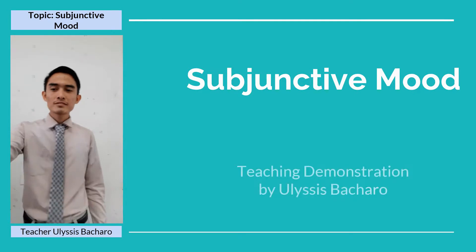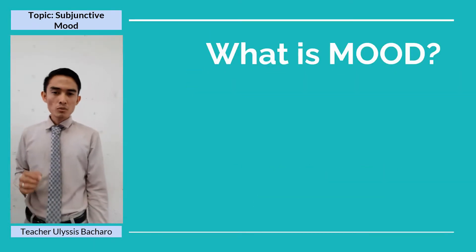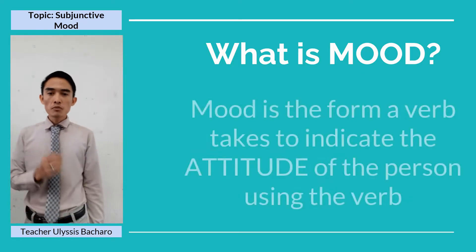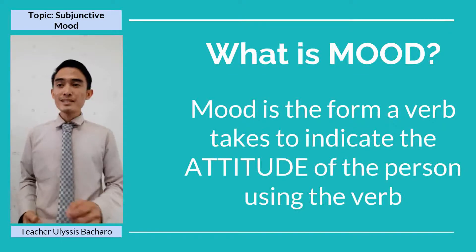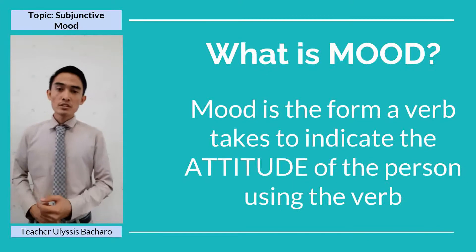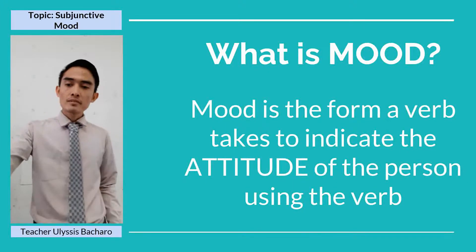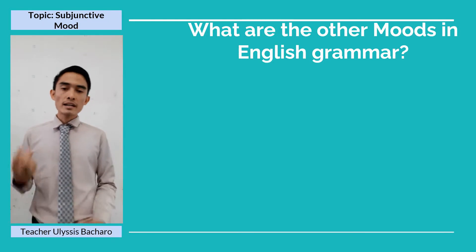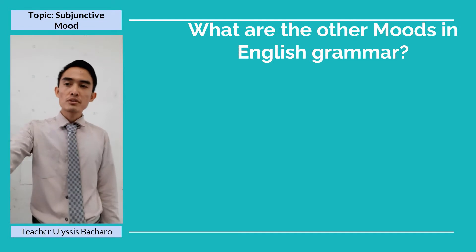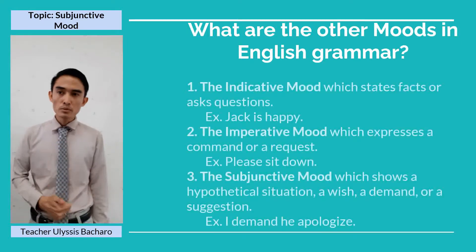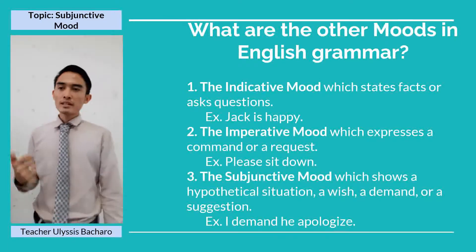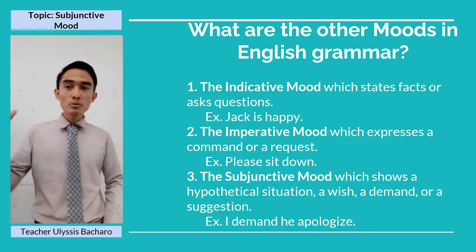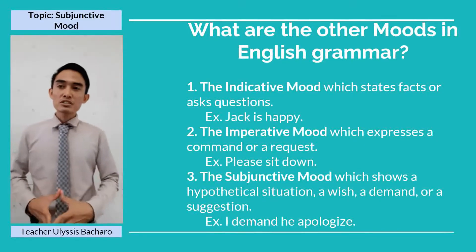To start with, let's have this question: What is a mood? Mood is the form a verb takes to indicate the attitude of a person using the verb. In English grammar, there are actually three moods: the indicative mood, the imperative mood, and the subjunctive mood. Our focus for today is the subjunctive mood, but let's go through all the moods briefly.